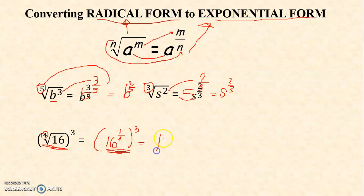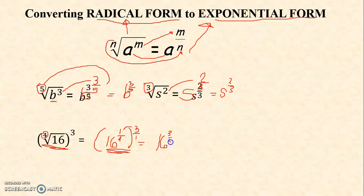We have here 16. What is the denominator of 3 here? It is 1. If you recall power raised to another power, you're just going to multiply the exponents. 1 times 3 is 3, and 4 times 1 is 4. So you have 16 raised to 3 over 4. This can be the final answer, and if your answer is in this form, then it is acceptable.